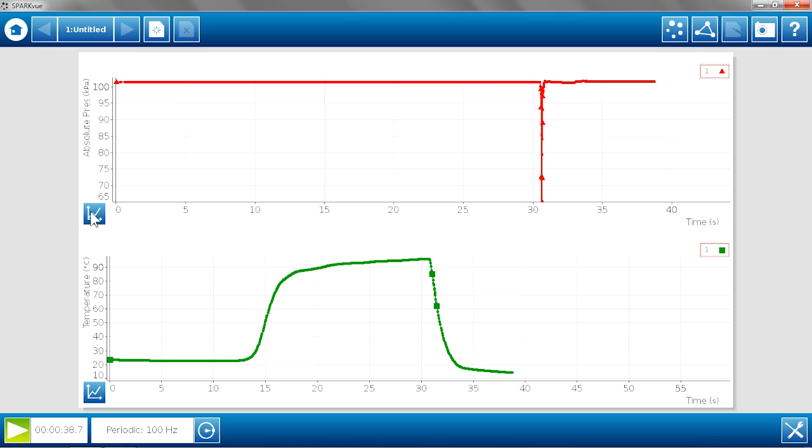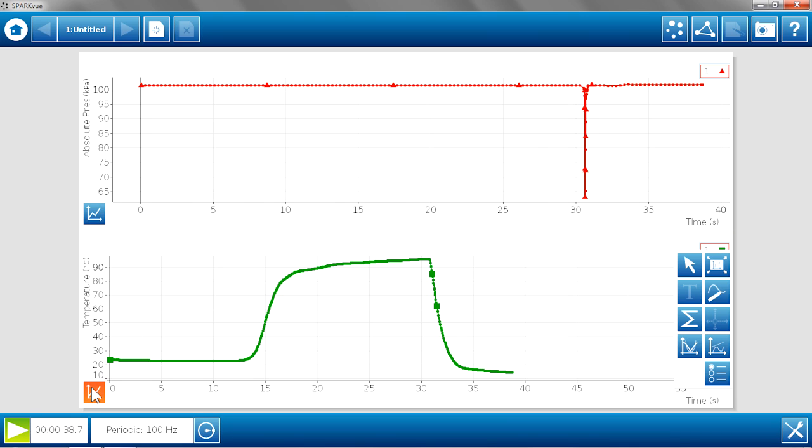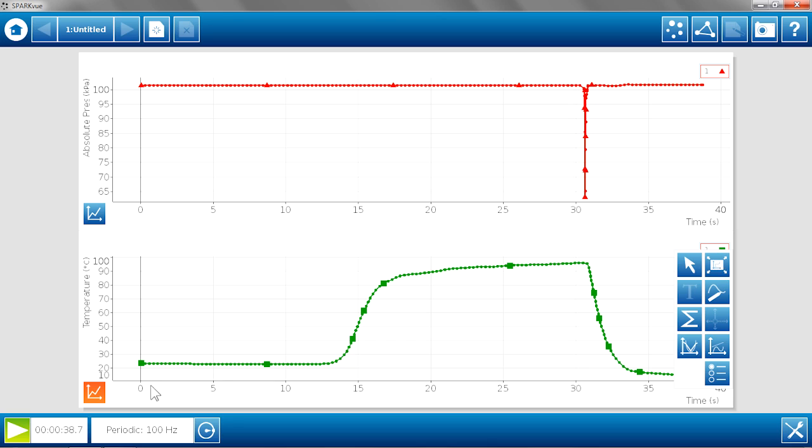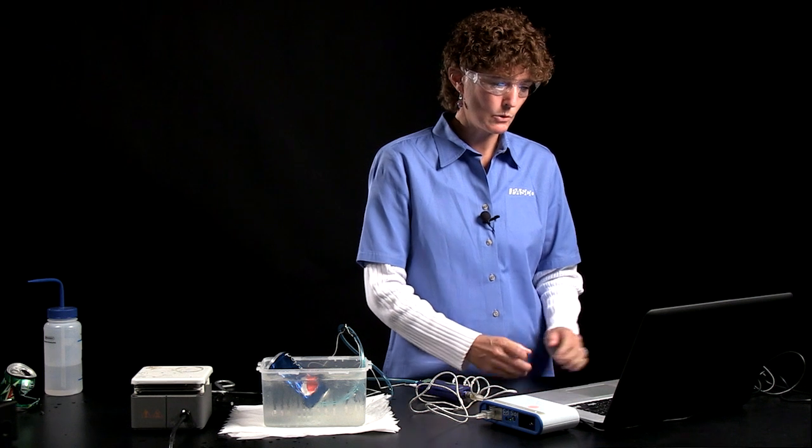We'll go ahead and scale the graph so we can see exactly what happened here. I'll close the tool palette. Although I have several data points to the left between zero and 30 seconds, at 30 seconds thereabouts is where the action seems to have occurred.